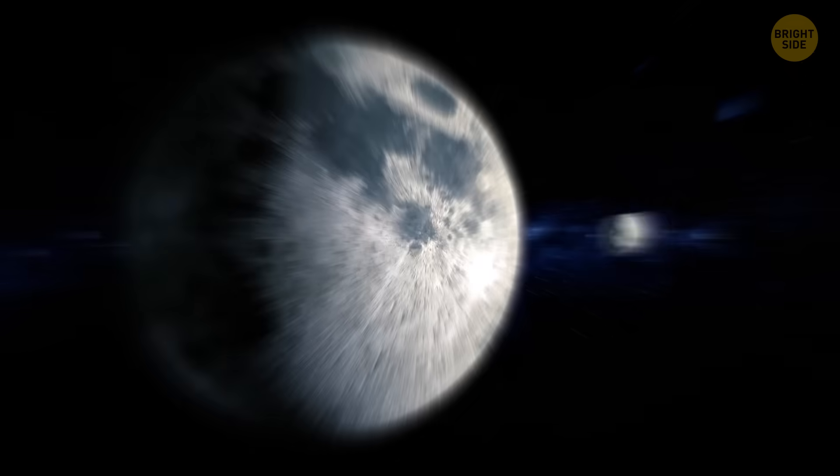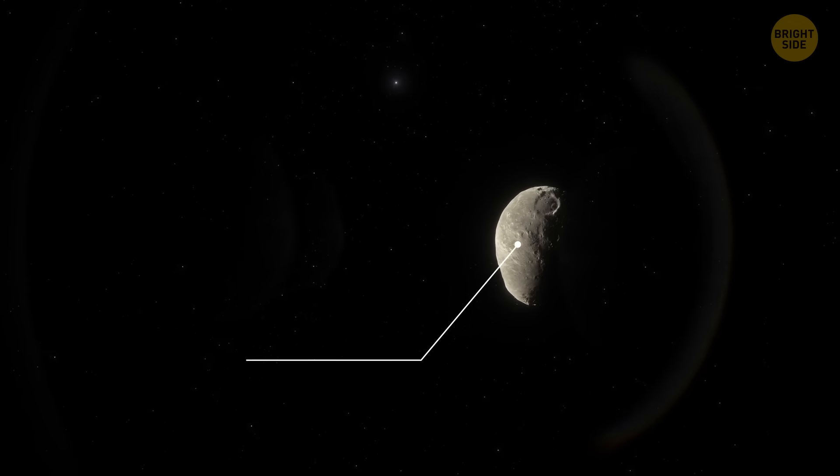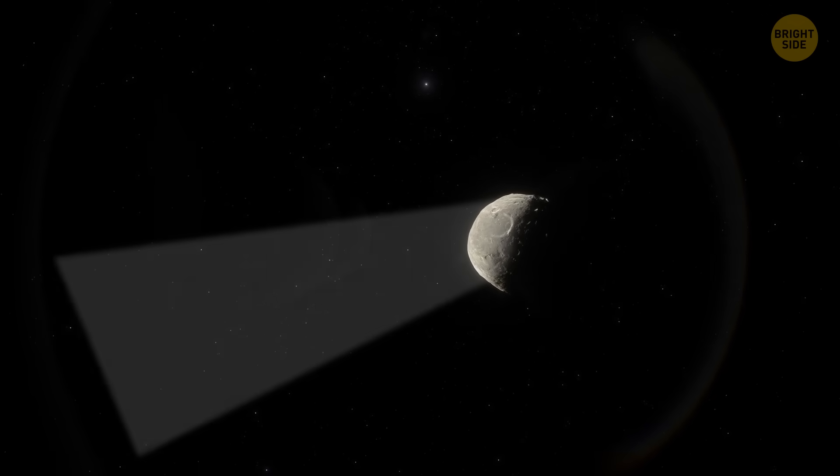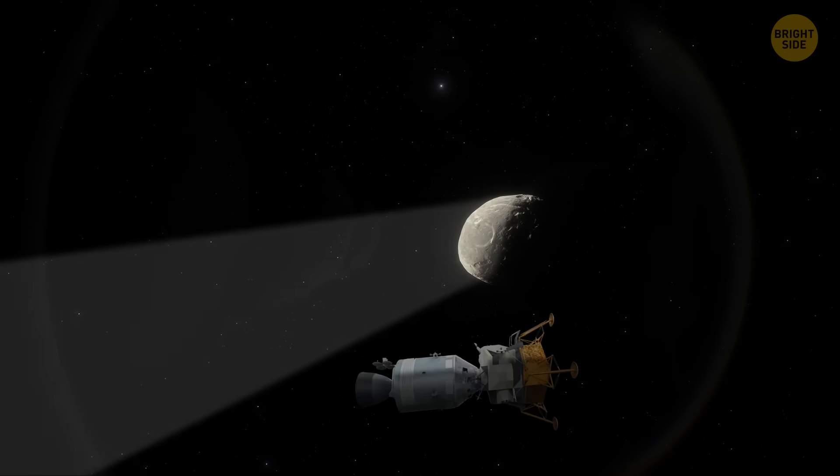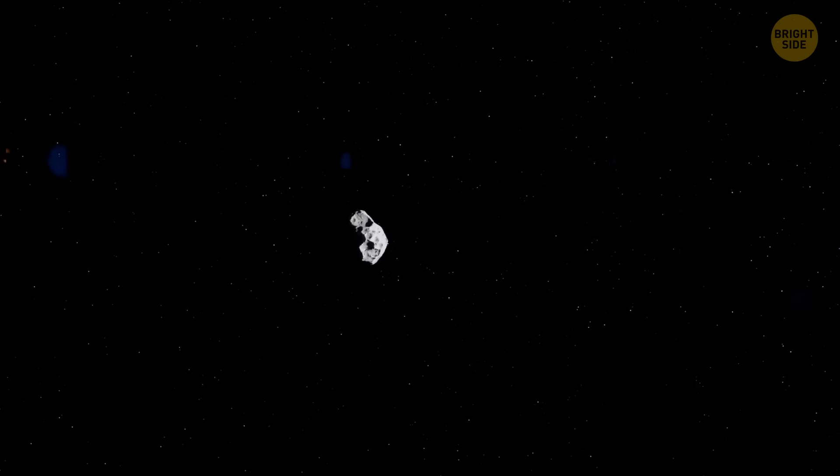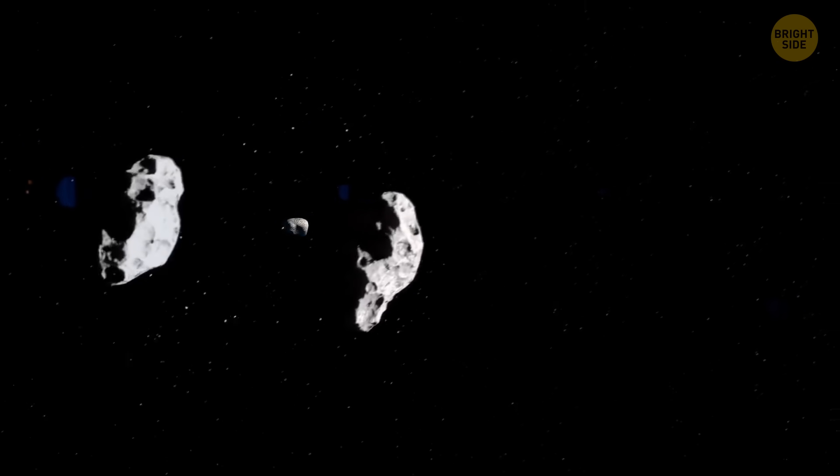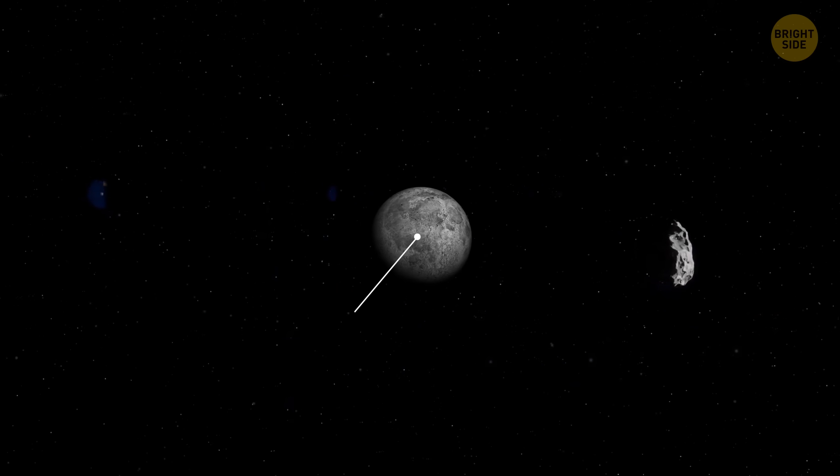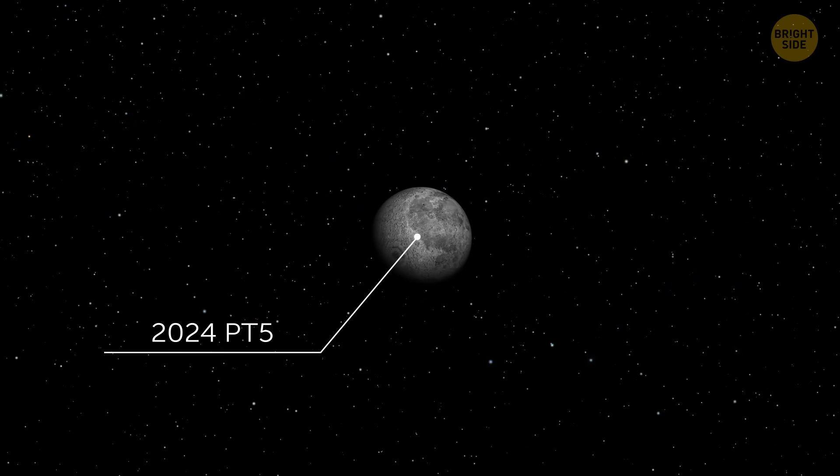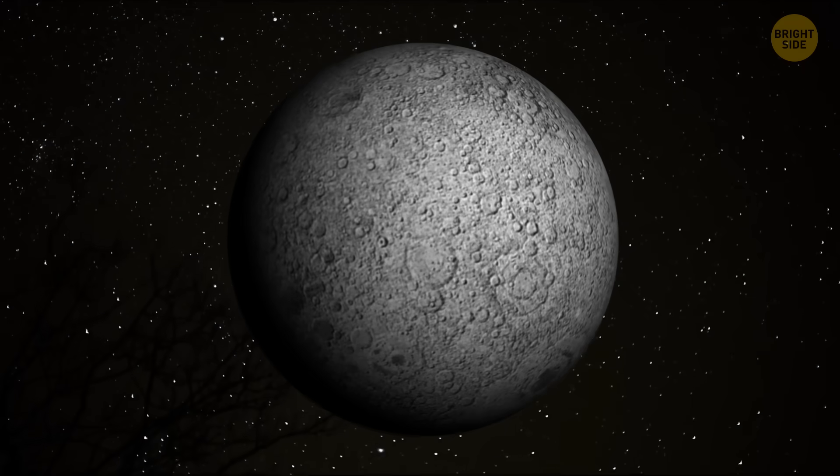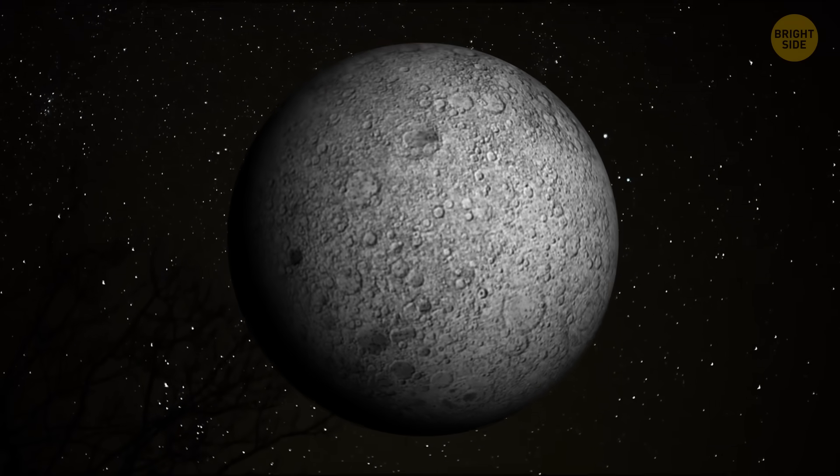For instance, there's another quasi-moon named Kamo'oaloea that reflects light in almost the same way as the lunar rocks we brought back during the Apollo missions. Because of that, some researchers think it might actually be left over from a huge impact that happened long ago. There's also 2024 PT5, a temporary mini-moon from the end of last year. Tests showed that its surface looked like lunar basalt, suggesting it probably came from the moon.